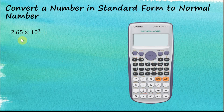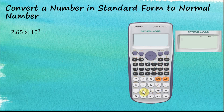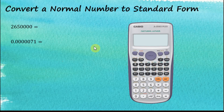Now, converting a number in standard form to a normal number. Let's say we have a number in scientific notation and would like to convert it to a normal number. This is easy: key in 2.65 × 10³ and press equal — the calculator will straight away display the answer as a normal number. To convert a normal number to standard form, such as a very big or very small number, we need more work.